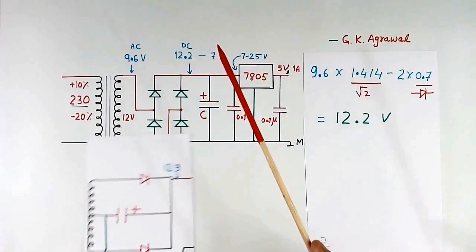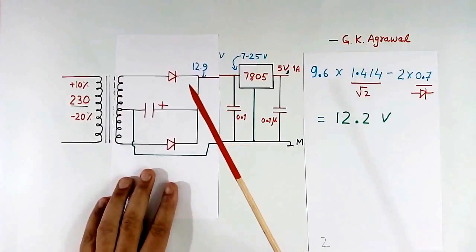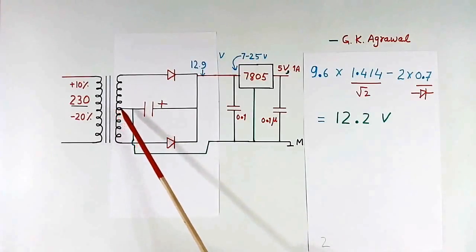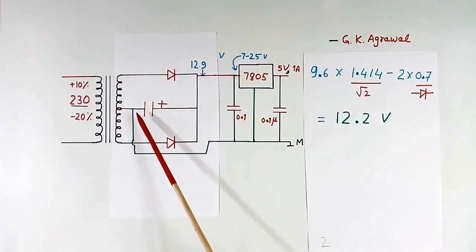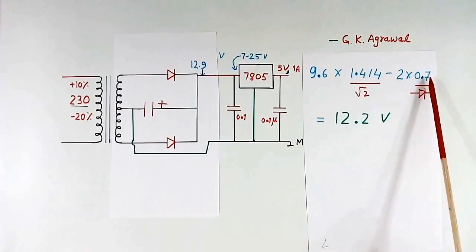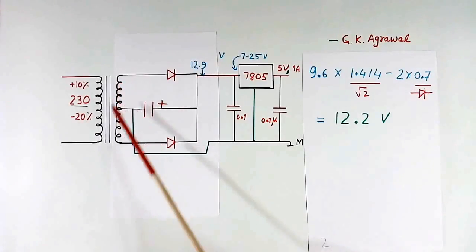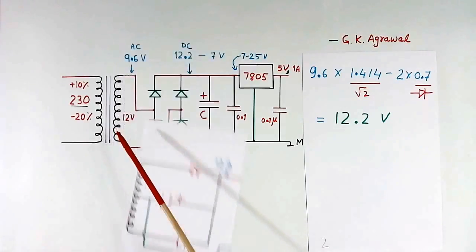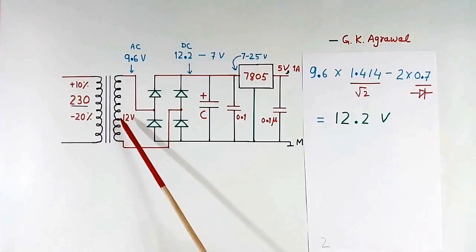Now suppose our circuit is like this. The secondary is mid tap type. In this case, only one diode will come. Then here 2 we will not write, we will write only 0.7 volt. This is diode drop. But here what happens, this upper winding and lower winding should have equal voltage. If voltage is not equal, then DC current will flow in this transformer secondary and transformer will become hot and will not work properly. So this kind of arrangement is better.